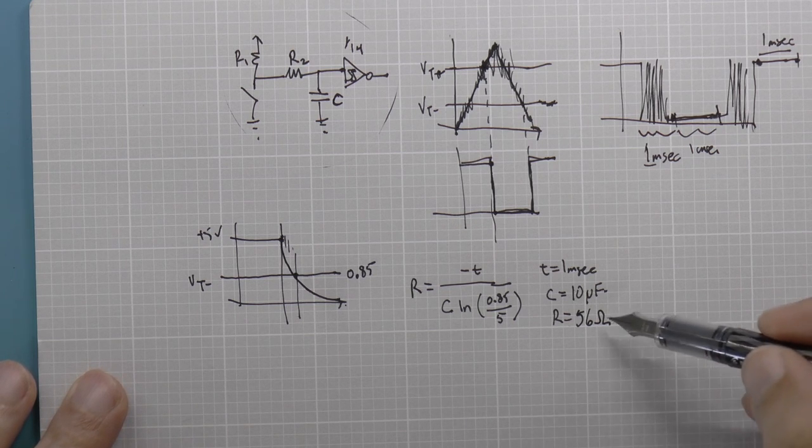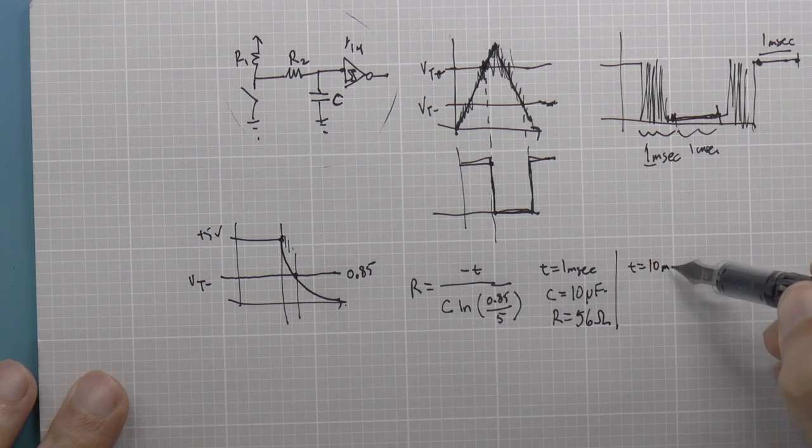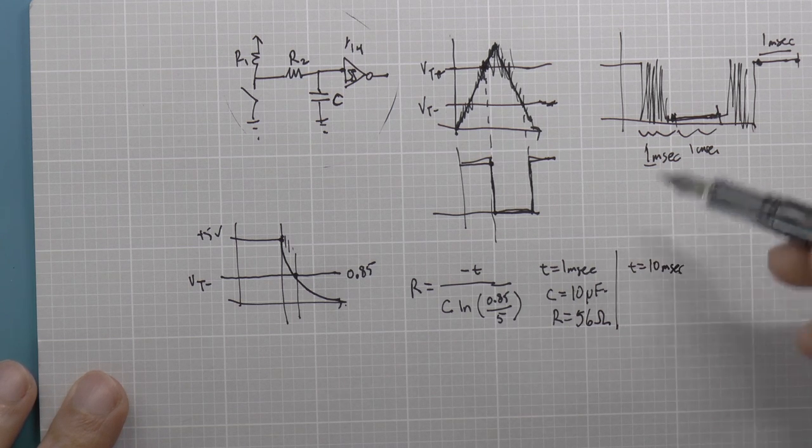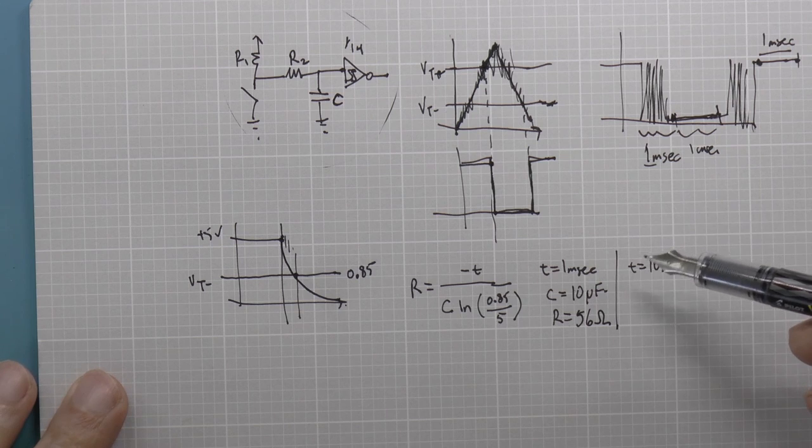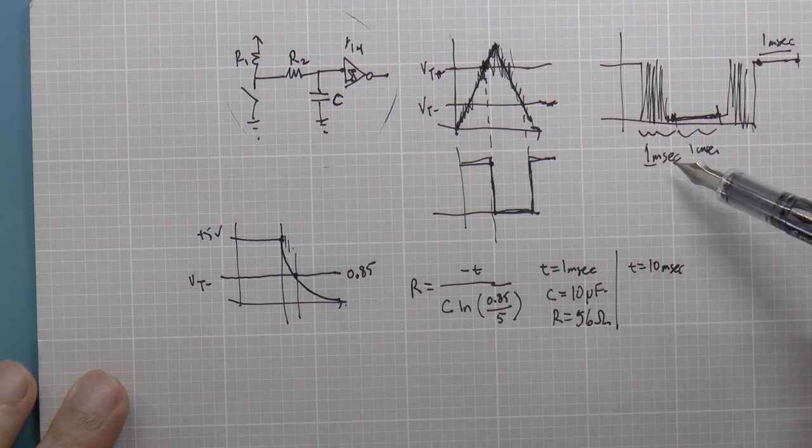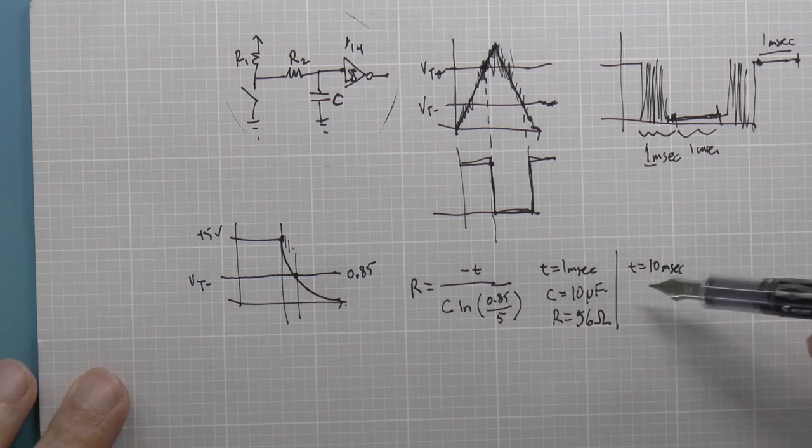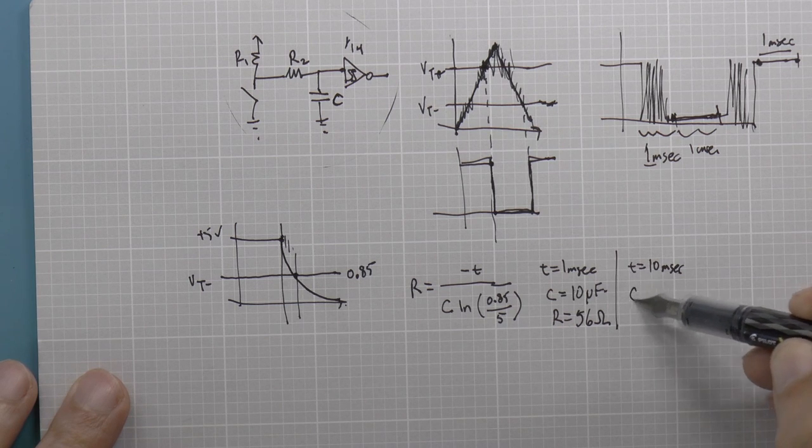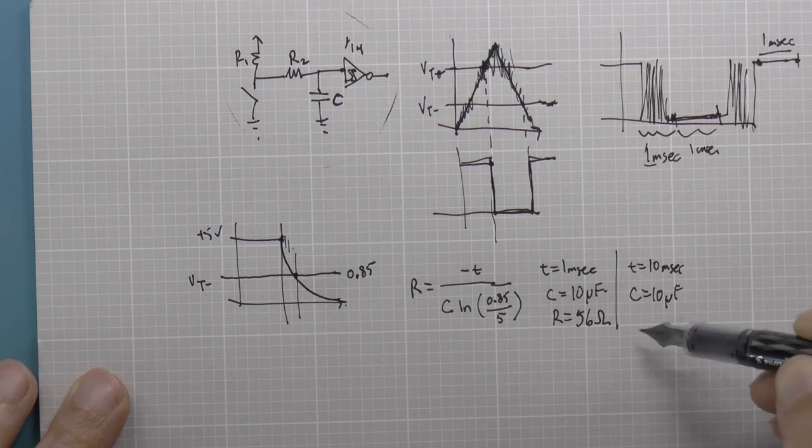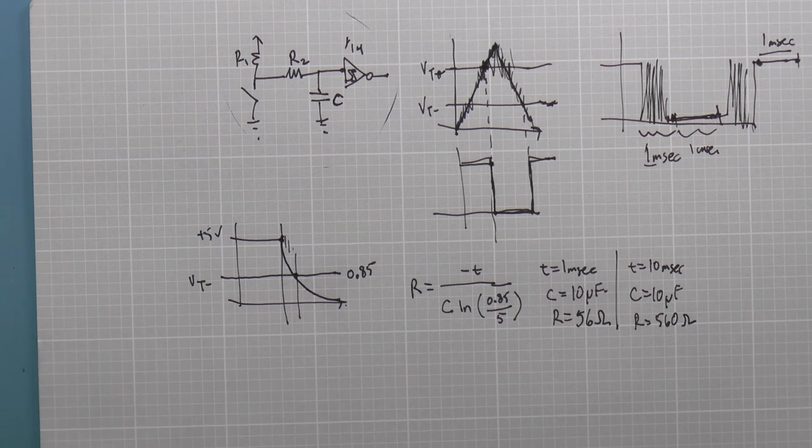Now, you've probably seen the capacitor discharge equation. I'm going to write it a little bit differently. I'm going to basically solve for R. Let's assume that this capacitor is C, whatever it is, because we already know the amount of time that we want it to take. So for discharging, the resistance is simply going to be negative T divided by C times the natural logarithm of the threshold 0.85 divided by the initial starting point of the capacitor, which is 5 volts. Now, if we wanted to have T equals 1 millisecond, which we've determined was the rough bounce time of this paddle switch, and if we say that the capacitor is, say, 10 microfarads, then R is going to be 56 ohms.